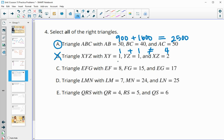In C, eight squared is 64. 15 squared is 225. 17 squared is 289. 64 plus 225 does equal 289. So this is a right triangle. D, seven squared is 49. 24 squared is 576. And 25 squared is 625. 49 plus 576 does equal 625. So this is a right triangle.